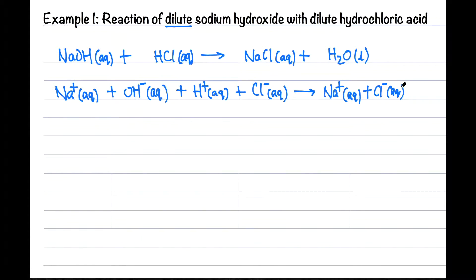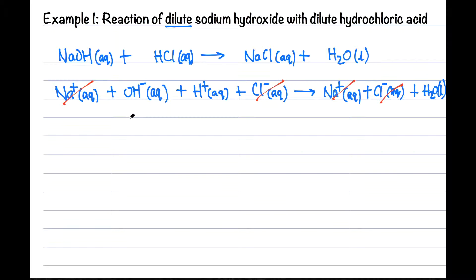Anything that is not aqueous we will leave as is. Now let's compare the left-hand side and the right-hand side. Items that are the same on both sides can be cancelled — these are called spectator ions. They are not involved in the chemical reaction; they just remain in solution. The last step is to copy out whatever is remaining into the final ionic equation.